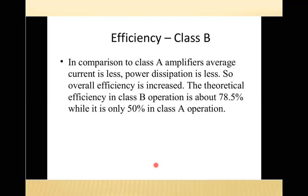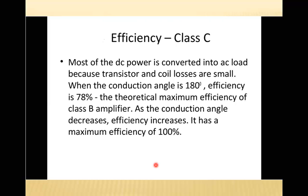For Class B efficiency: compared to Class A, average current is less and power dissipation is less, so overall efficiency is increased. The theoretical efficiency in Class B operation is 78 percent, while it is only 50 percent in Class A. For Class C efficiency: most of the DC power is converted into AC load because transistor and coil losses are small. When the conduction angle is 180 degrees, efficiency is 78 percent (same as Class B). As the conduction angle decreases, efficiency increases, with a theoretical maximum efficiency of 100 percent for Class C.